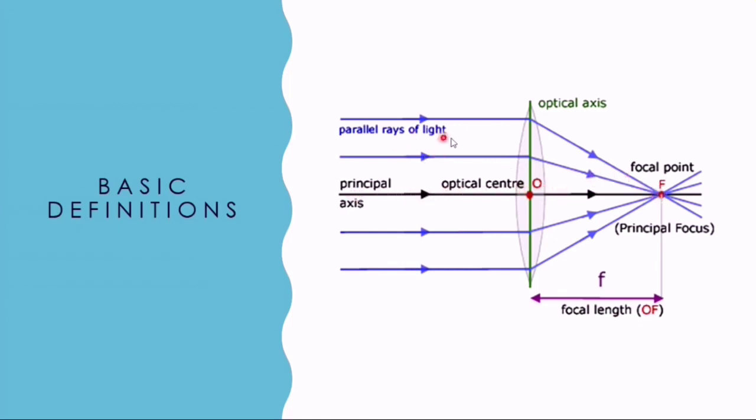The principal axis is the line passing through the center of curvature of the lens.